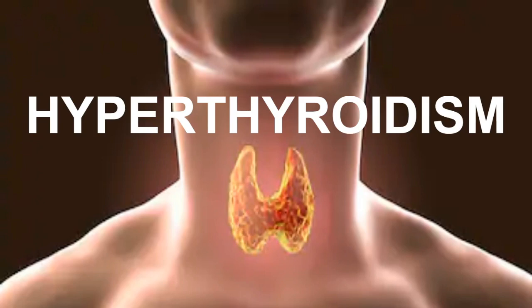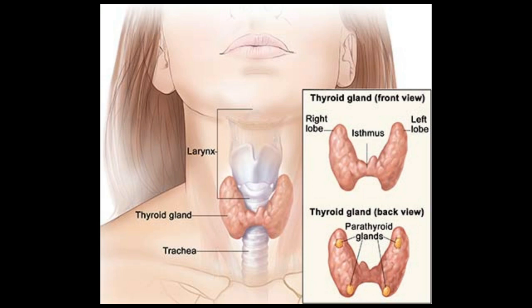Hello everyone, today we will discuss about hyperthyroidism. First of all, we all know that the thyroid gland actually secretes thyroid hormones, that is T3 and T4. I have discussed about the whole thyroid gland and its hormones in my previous video, so you can check that out. These thyroid hormones are very important for various metabolic processes occurring in our body. But sometimes, in some cases, there is over-secretion of thyroid hormones by the thyroid gland, which leads to hyperthyroidism.